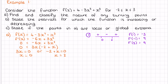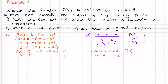Looking at the sign diagram: at x = 0, the function increases up to that point then has a negative gradient after, so it's a maximum. At x = 2, the function is decreasing going into it and then increasing after, so it's a minimum. Substituting back into the original function: f(0) = 4, so the maximum coordinate is (0, 4). And f(2) = 0, so the minimum coordinate is (2, 0). That completes the first derivative test.